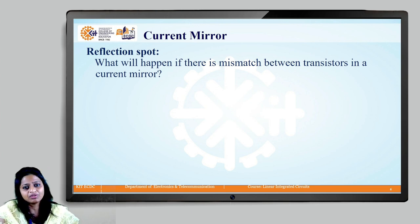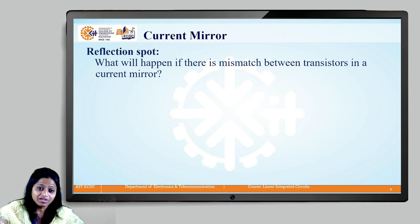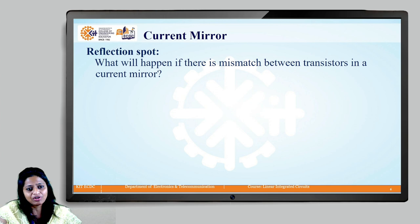I had asked you a question that what will happen if there is a mismatch between the transistors in the current mirror. If there is a mismatch between the transistors in the current mirror, then it will affect the accuracy of the circuit. In turn, it will divert the current, mirrored current from its intended value. We will not get the exact value as we wanted to have.